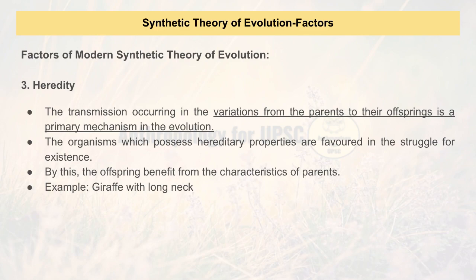The third factor is heredity. Properties that offspring acquire from their parents help them in the struggle for existence. Remember Darwin's and Lamarck's theories: in Darwin's case, some giraffes were already having long necks and because of that long neck they were able to reach tree leaves easily, slowly transferring this trait to their offspring. Lamarck said all giraffes had short necks — which was negated by Darwin's theory. This is a classic example of heredity.